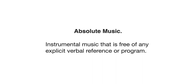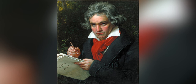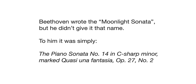This was in contrast to much of the music of the classical period, which we called absolute music — instrumental music free of any explicit program. For example, Beethoven wrote the famous Moonlight Sonata, but he didn't call it that. To him, it was simply the Piano Sonata No. 14 in C-sharp minor, Quasi Una Fantasia, Op. 27 No. 2. The popular name that everybody knows this sonata by, the Moonlight Sonata, goes back to a critic's remark after Beethoven's death.